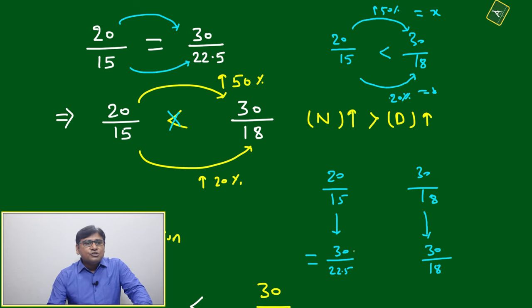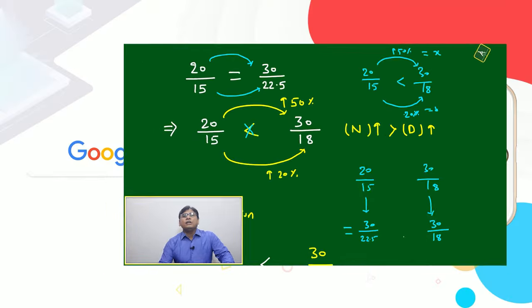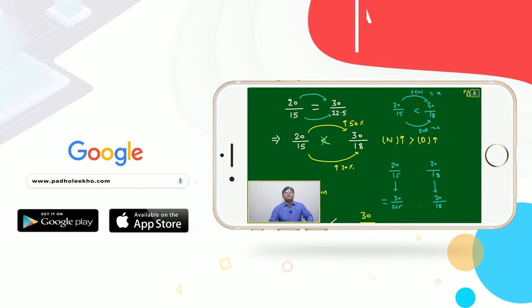Now for these two ratios, numerator is same. Then which will have more value? Whichever has the smallest denominator, that will have the more value.